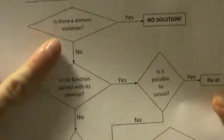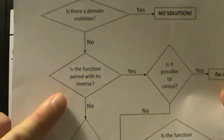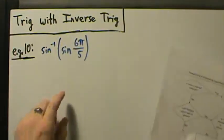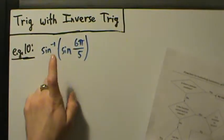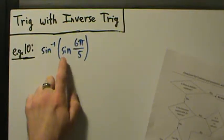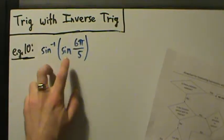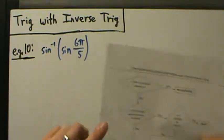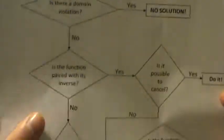Is there a domain violation? No. So is the function paired with its inverse? Yes — here we see sine is paired with inverse sine. It's sine and inverse sine paired together. So is the function paired with its own inverse? Yes.